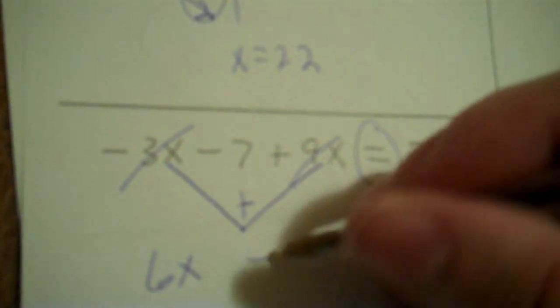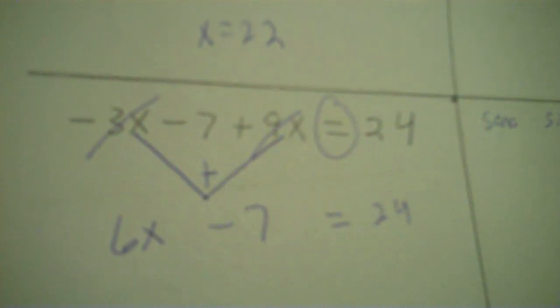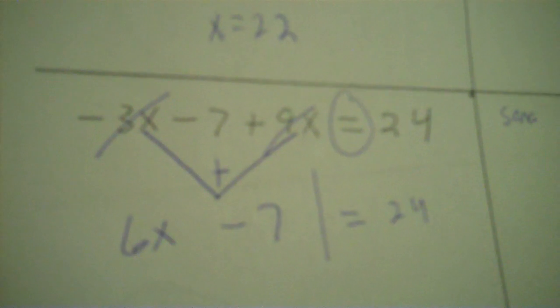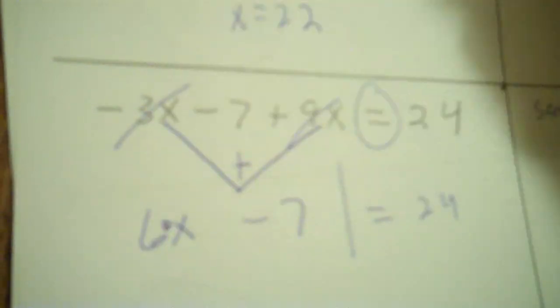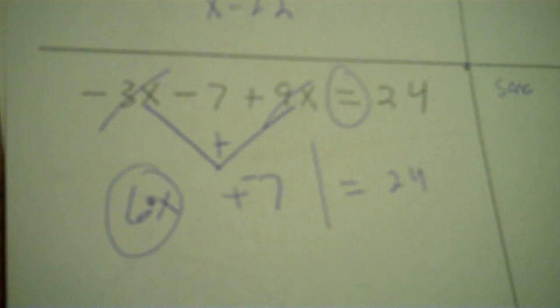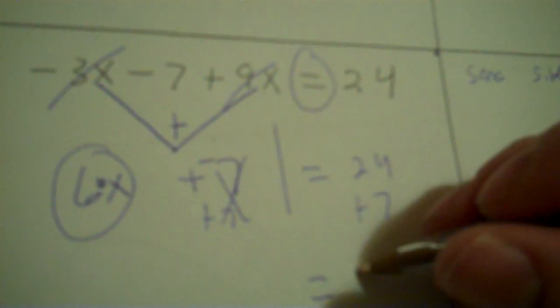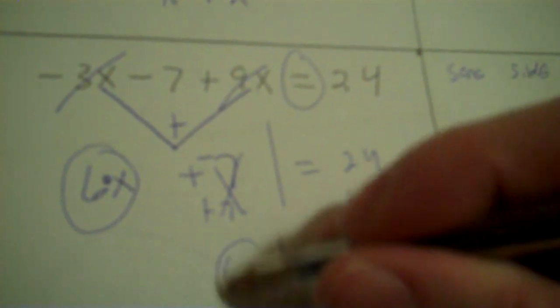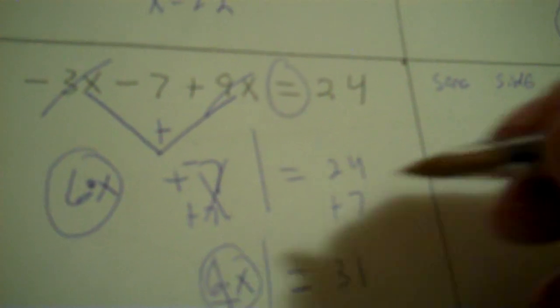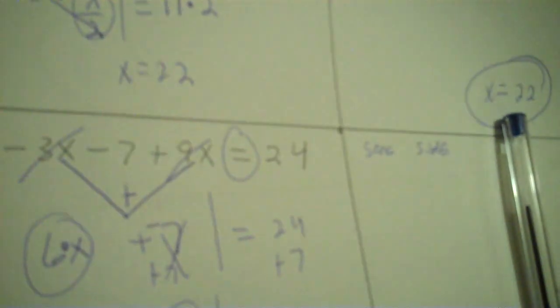And then you have the minus 7. Now you've simplified it. x is just over here — it would be times 6 and a minus 7. Make that a plus negative 7. So you take out the negative 7 by adding 7. 24 plus 7 gives you 31. And then 6 dot x — divide by 6. 31 divided by 6: just put 5.16 repeating.